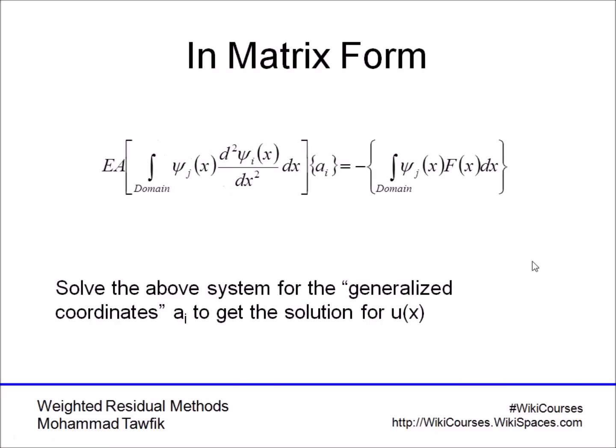Now, if we put this in matrix form, we will get a set of equations that look like this, in which the k_ij, the general term of the equation, is equal to ψ_j times the second derivative of ψ_i. Each equation is the j's equation. So, for each ψ_j, you're going to multiply it by all the second derivatives of all the functions, including itself, because at some point i will be equal to j. On the right-hand side, you should integrate over the whole domain ψ_j, the same ψ, multiplied by f(x).